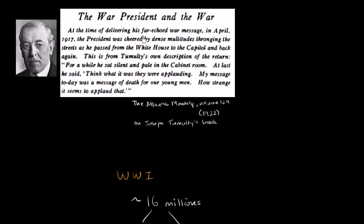At the time of delivering his far-echoed war message in April 1917, the president was cheered by dense multitudes thronging the streets as he passed from the White House to the Capitol and back again. This is from Tumulty's, that's Woodrow Wilson's chief of staff, or it was called private secretary then. This is from Tumulty's own description of the return.